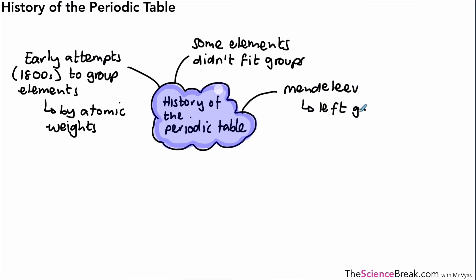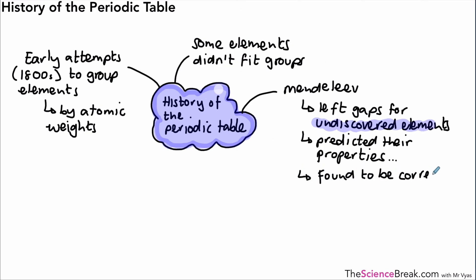But some of those elements didn't fit the groups. We then had around about 1869 Dmitry Mendeleev, a Russian scientist. He left gaps in the periodic table based on what he thought were elements that had not been discovered yet. He predicted their properties and he was found out to be correct when they were discovered. That lent a lot of credibility to his ideas.